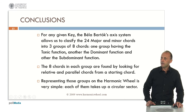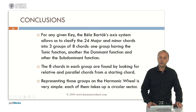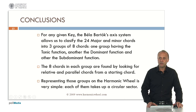Conclusions: for any given key, the Béla Bartók axis system allows us to classify the 24 major and minor chords into three groups of eight chords each — one group with the tonic harmonic function, another group with the dominant harmonic function, and the other group with the subdominant harmonic function. The eight chords in each group are found by looking for relative and parallel chords from a starting chord. The representation of these groups on the harmonic wheel is really simple — each of them takes up a circular sector. You can find all the information on the web page harmonicwheel.com. Thank you very much for your attention.